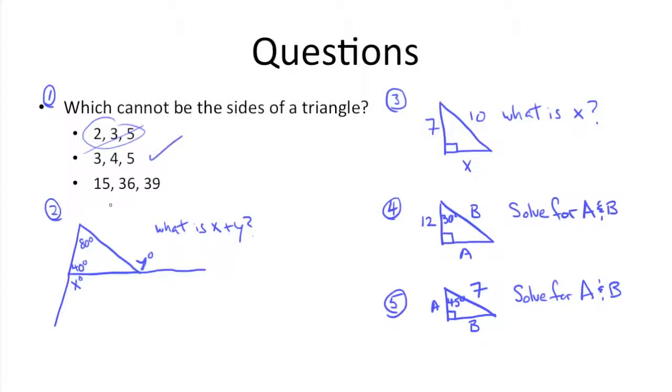And last up we have 15, 36, and 39. Fifteen plus thirty-six is fifty-one, which is greater than thirty-nine. Thirty-six and thirty-nine add up to seventy-five, which is greater than fifteen, and fifteen and thirty-nine add up to fifty-four, which is greater than thirty-six, so that works. So only 2, 3, 5 can't represent sides of a triangle.